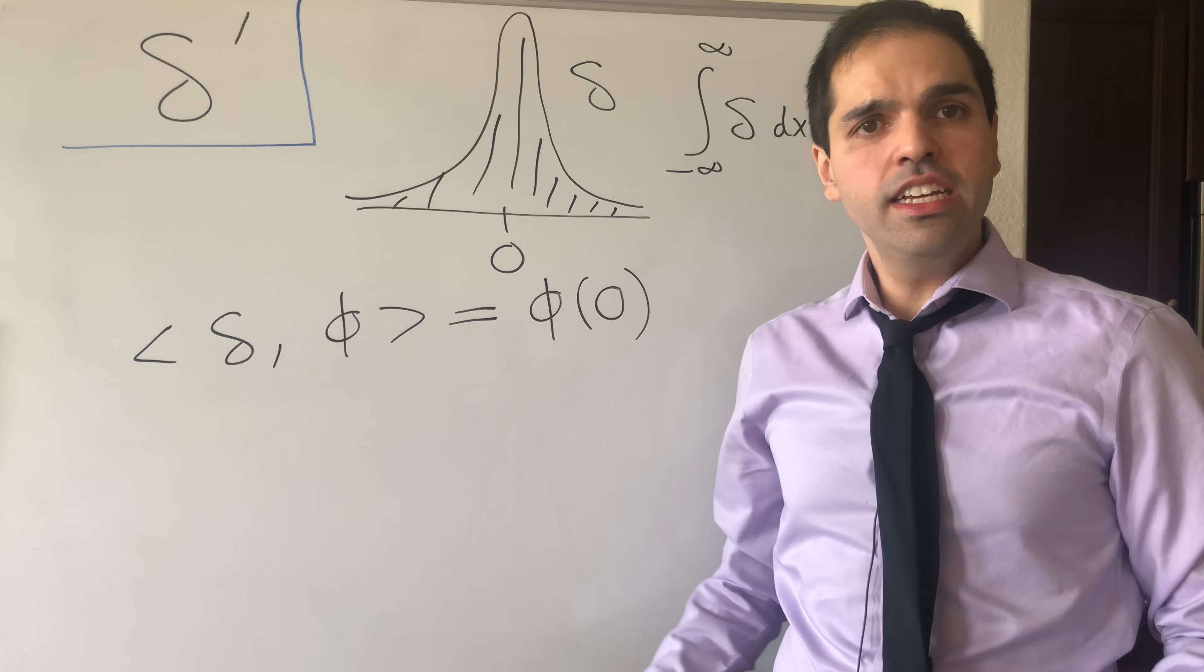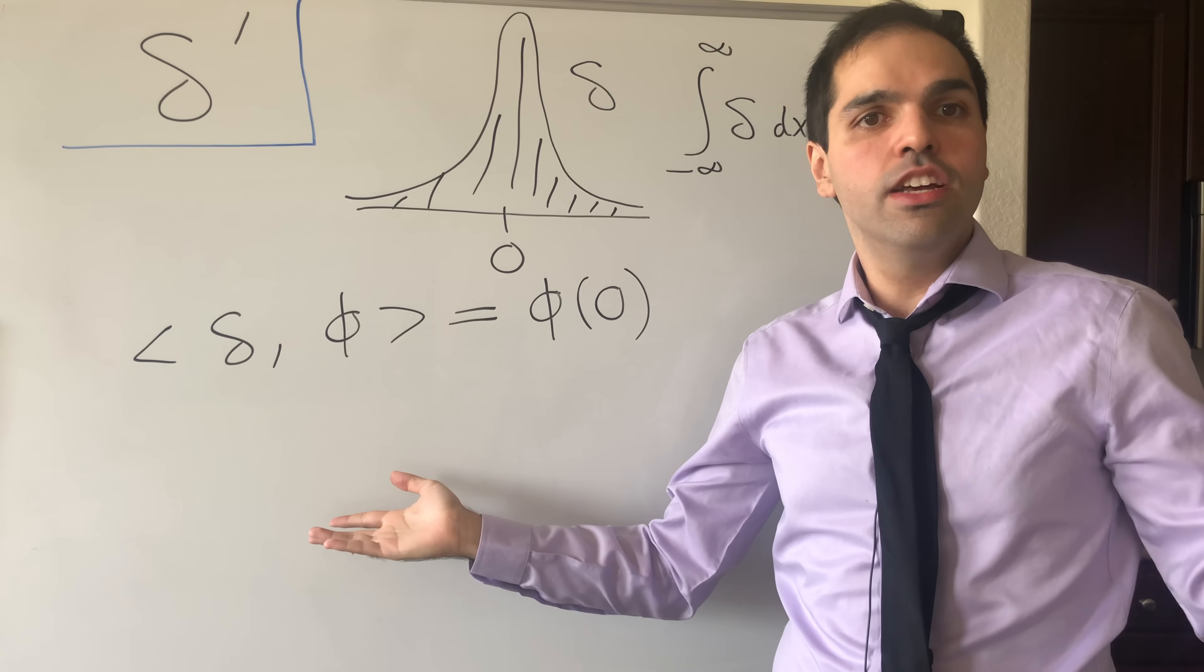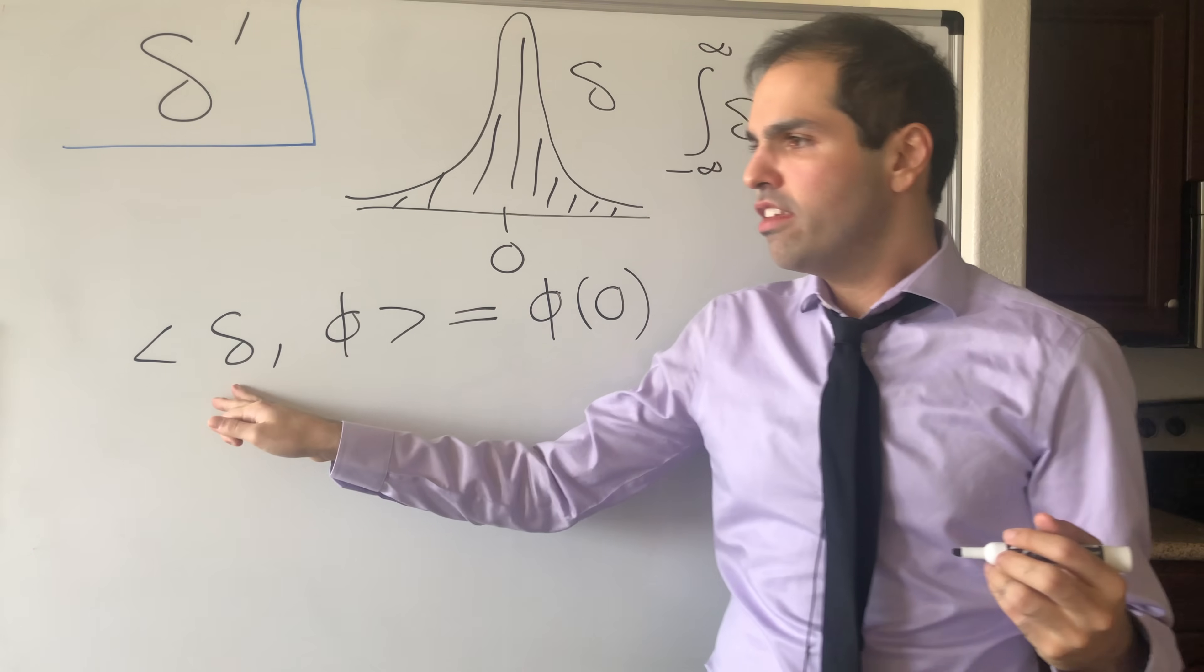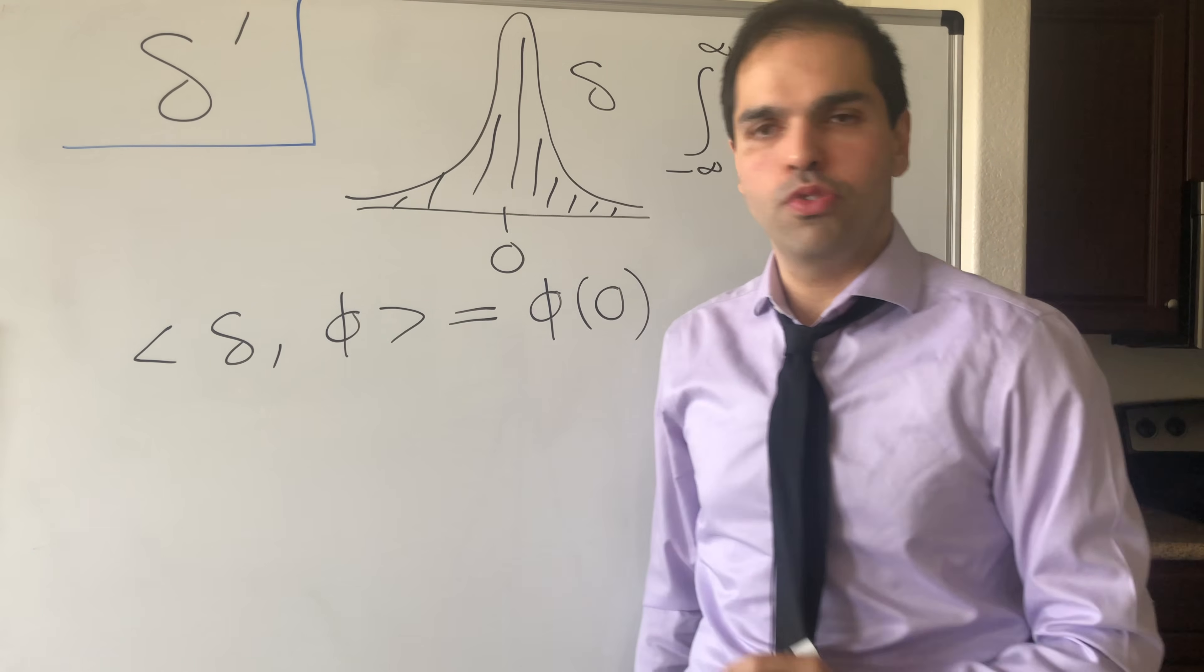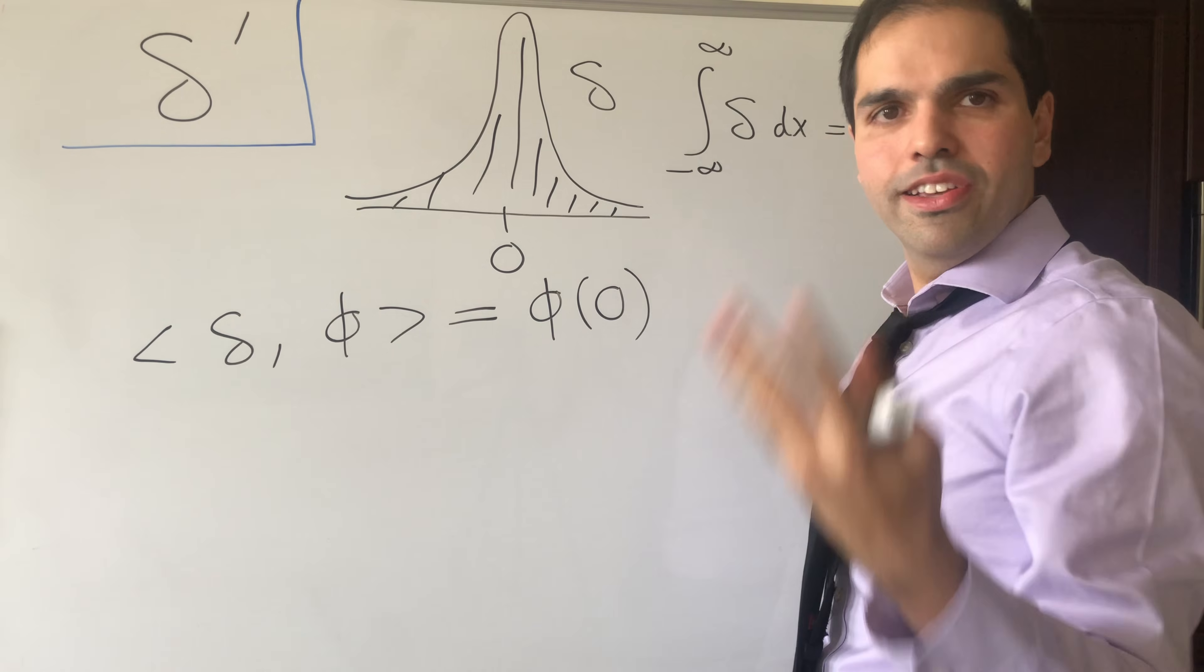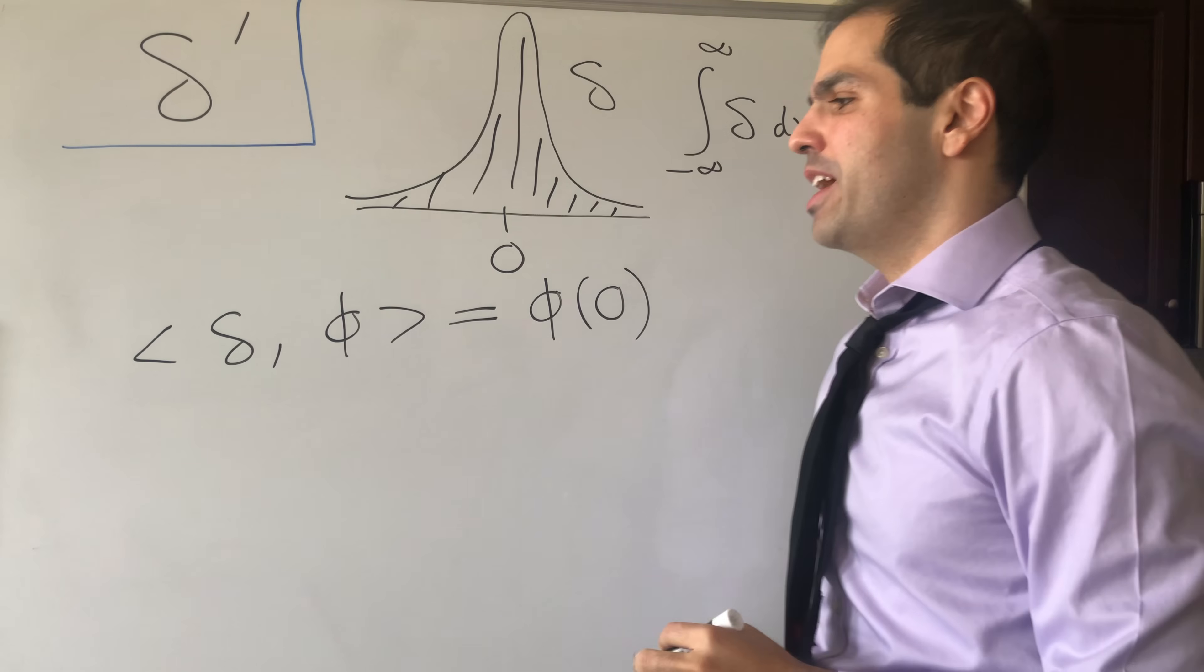And now the question is, what is the derivative of the Dirac delta if it exists? And for this, we need to define the derivative of a distribution, and it turns out the thing that helps us is integration by parts.